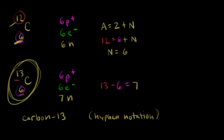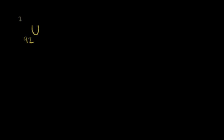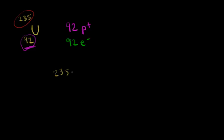Let's do one more example with uranium — U, with atomic number 92 and mass number 235. For protons, the atomic number is 92, so there are 92 protons. In a neutral atom, there are also 92 electrons. To find the number of neutrons, subtract the atomic number from the mass number: 235 minus 92 equals 143 neutrons.